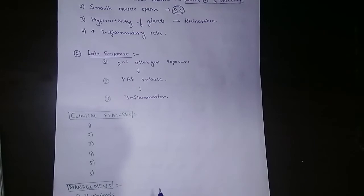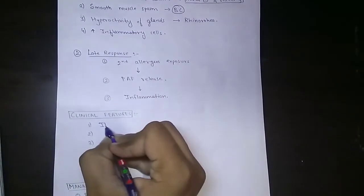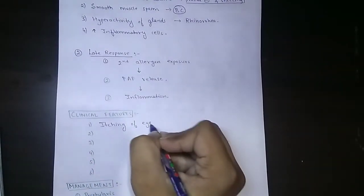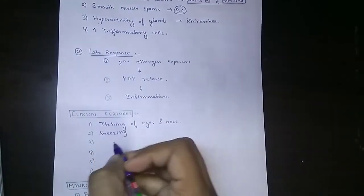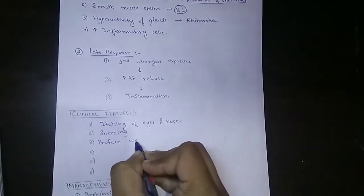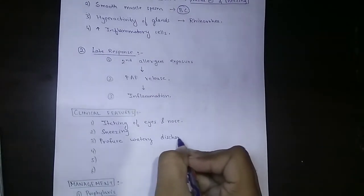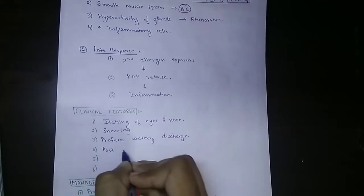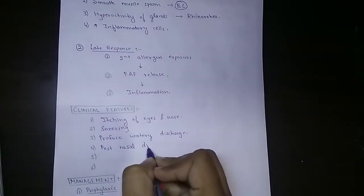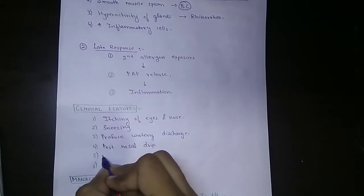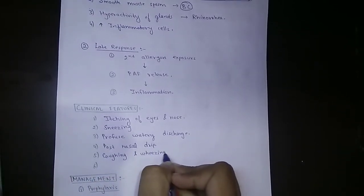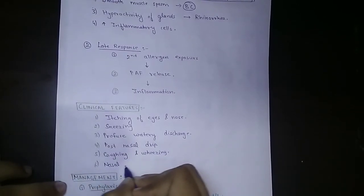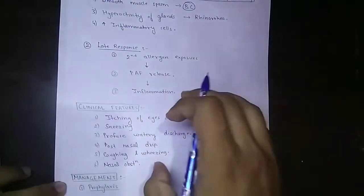Now coming to the clinical features. Number one is itching of the eyes and nose, number two is sneezing, number three is profuse watery discharge, number four is post-nasal drip, number five is coughing and wheezing, and number six is nasal obstruction.